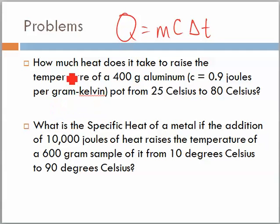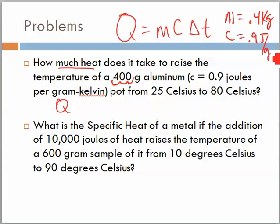Well, if you remember, our equation is Q equals mc delta t. Q, in this case, is what we're trying to find because it says how much heat. Let me list what I have here. My mass is 0.4 kilograms. I went ahead and moved the decimal three spots. C turns out to be 0.9 joules per gram degree kelvin. My change in temperature is from 25 to 80, so we have a temperature change here of 55 degrees.